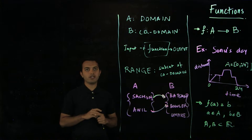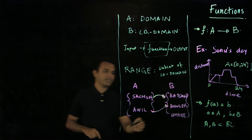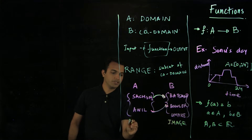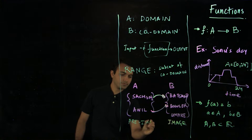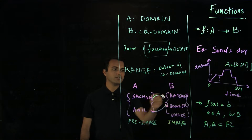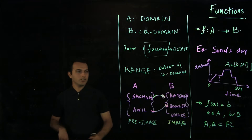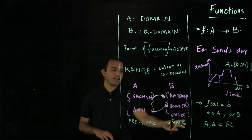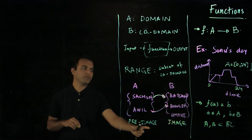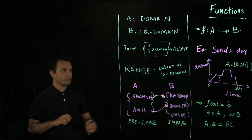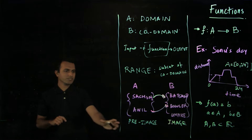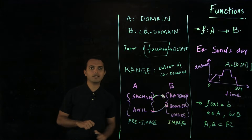Another term used for input and output is image and pre-image. Batsman is the image of the element Sachin in set B. The elements for which a mapping exists are called images, and the mapping from set A which exists is called the pre-image of that element. So the pre-image of batsman is Sachin, and the image of Sachin is batsman. These are terms that are not used that much, but they are certainly useful to know.